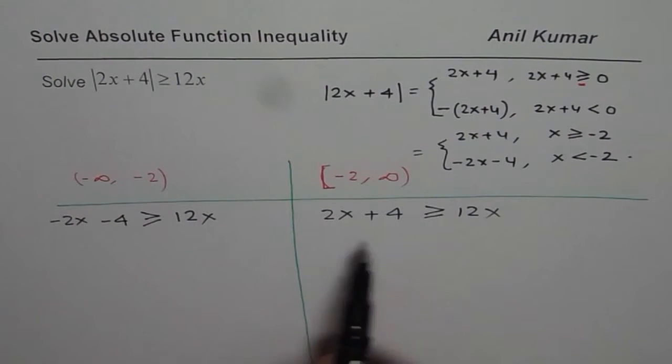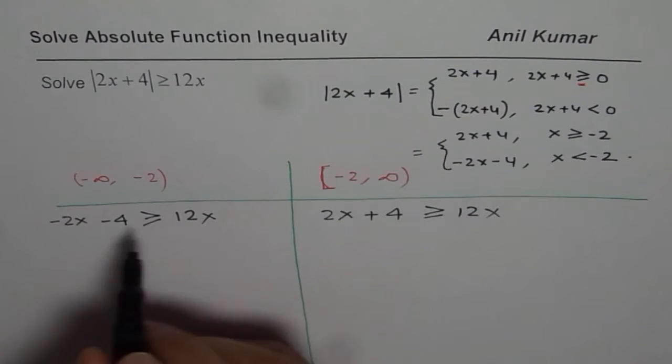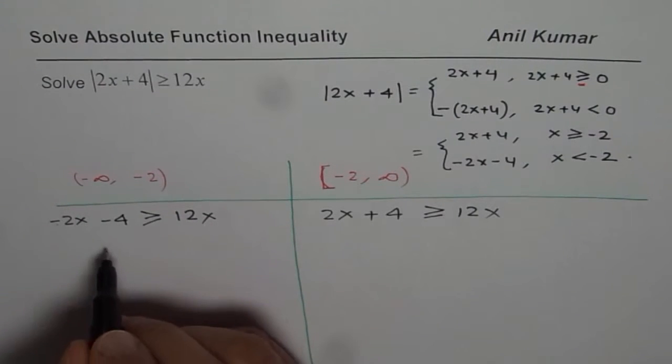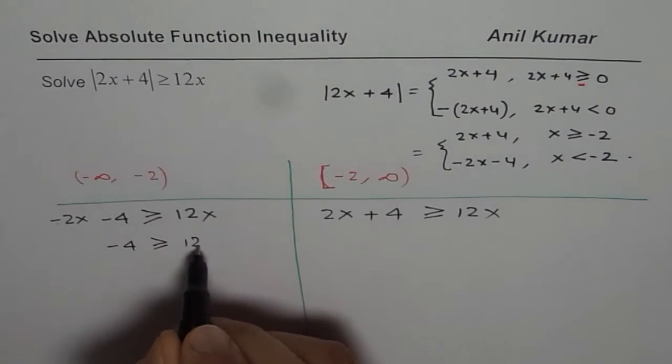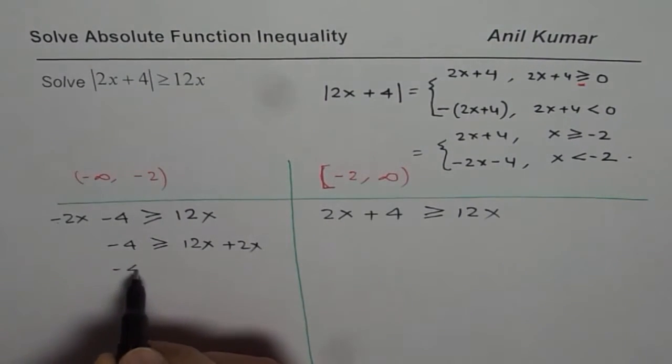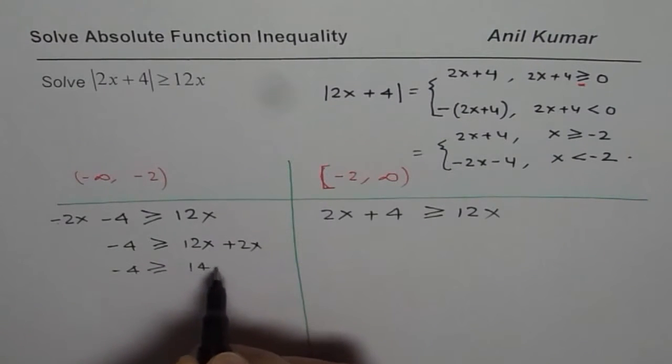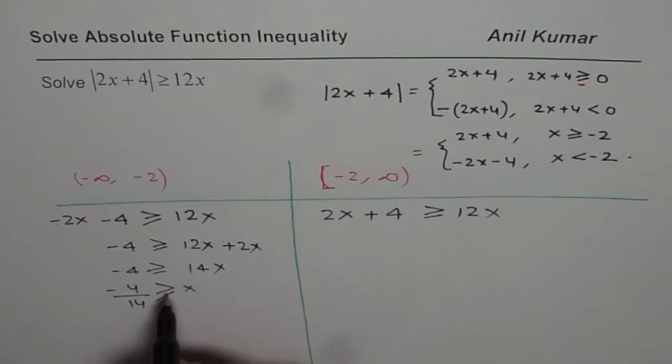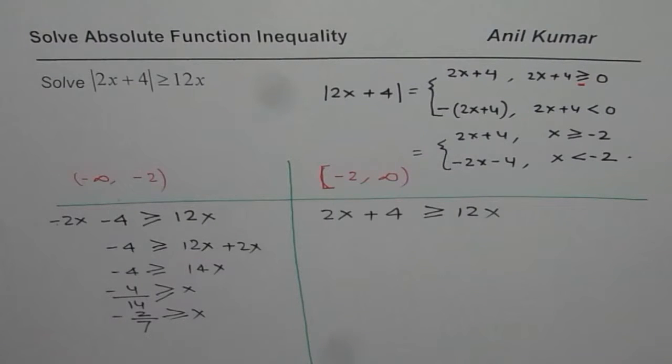Now you can pause the video, solve for these two intervals and then write your answer. Let's do it. So bring x terms together. I am avoiding negative sign on the left side for x, so I will take this on the right side. We have minus 4 greater than or equal to 12x plus 2x, or minus 4 is greater than or equal to 14x. Dividing by 14 we have x which is less than or equal to minus 4 over 14 or we can say x is less than or equal to minus 2 over 7.